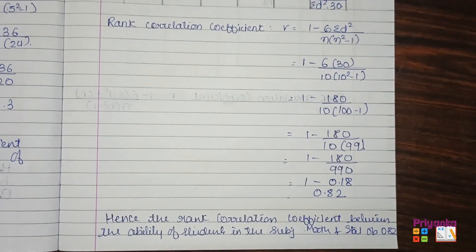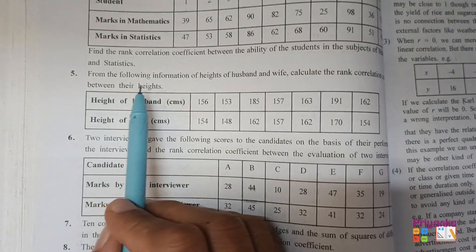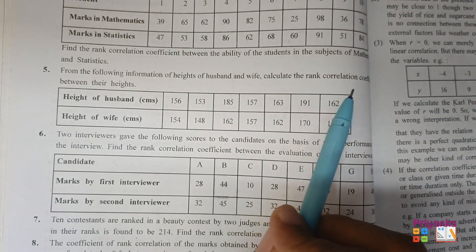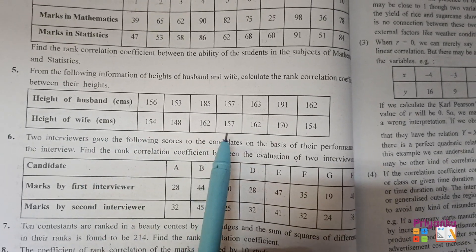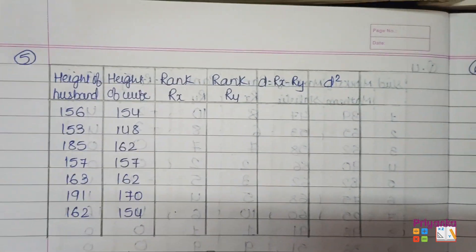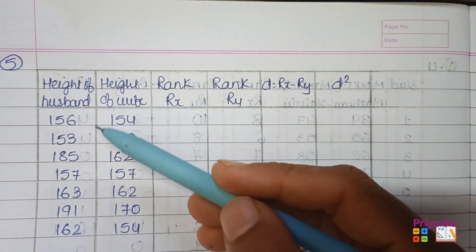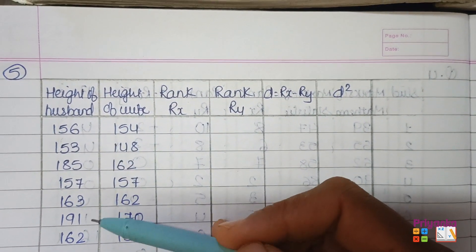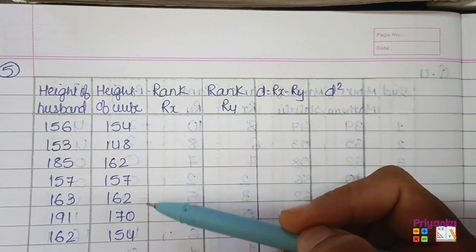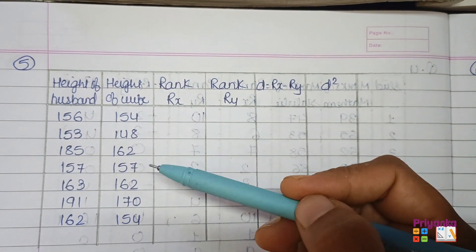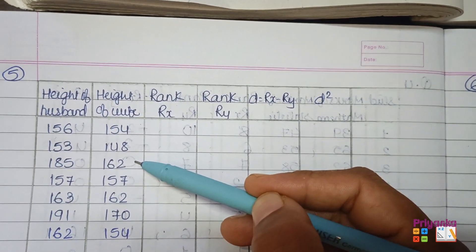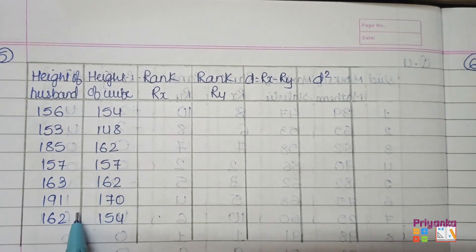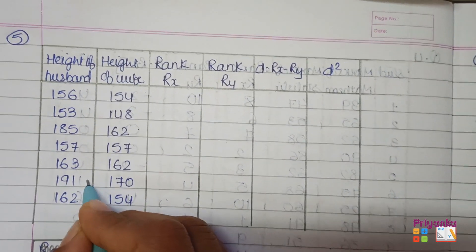Question 5: From the following information about the height of a husband and wife, calculate the rank correlation coefficient between their heights. The heights of husband and wife are given. First, write the information into the table. Check for repeated numbers — in the husband's column no repeats are visible, but in the wife's column two pairs of repeated numbers are found.